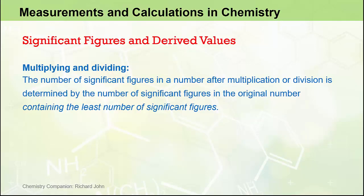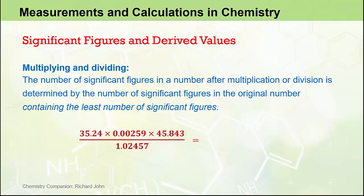So when multiplying or dividing measured values together — and we just saw an example of multiplication — the number of significant figures in a number after multiplication or division is determined by the number of significant figures in the original number containing the least number of significant figures. That's a mouthful, which is best demonstrated by example.